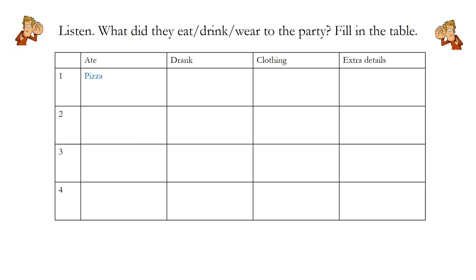Okay, we are now going to do a listening task. I want you to draw this table in your books: one, two, three, four down the left hand side, and then across: what they ate, what they drank, the clothing they wore, and any extra details. So I'd like you to pause now to complete that table, and I will begin with the audio shortly.